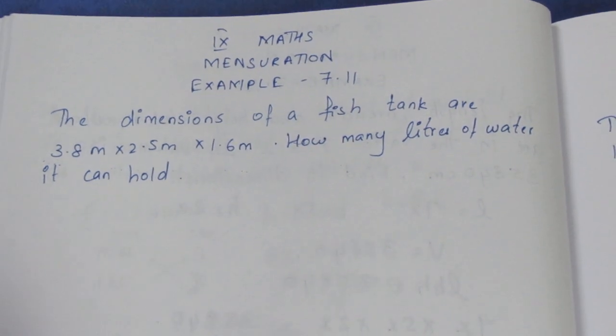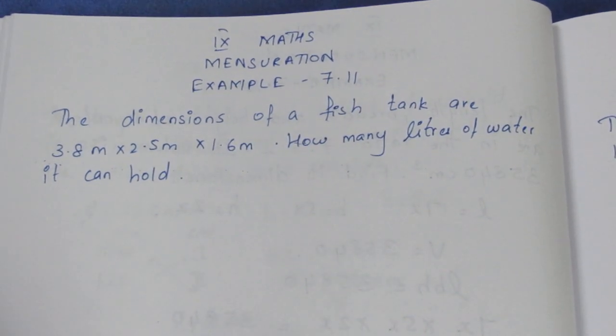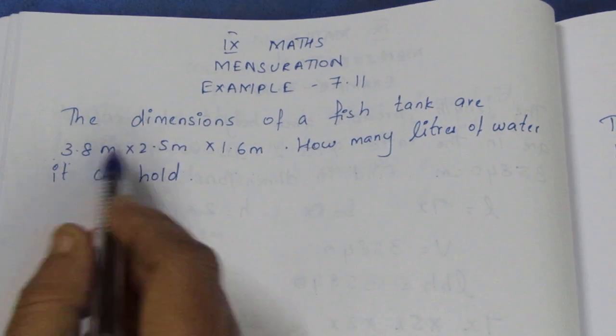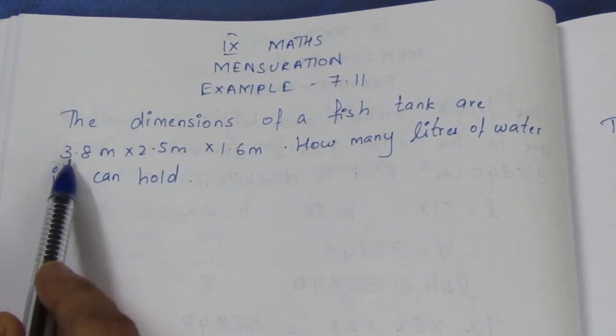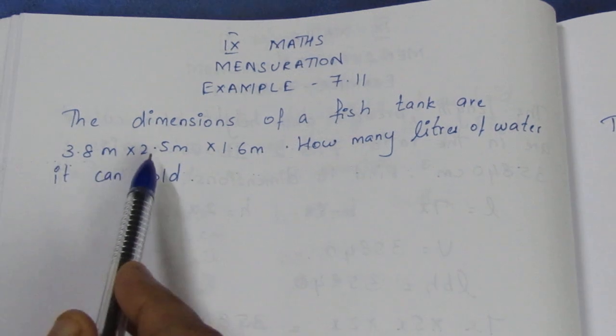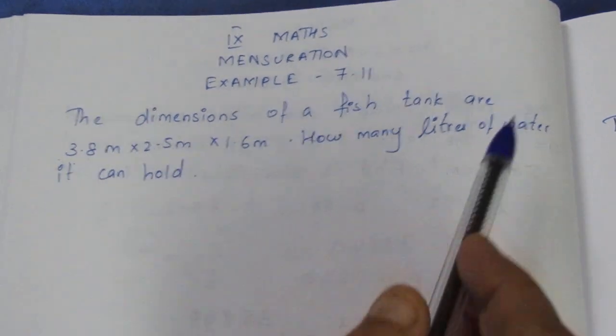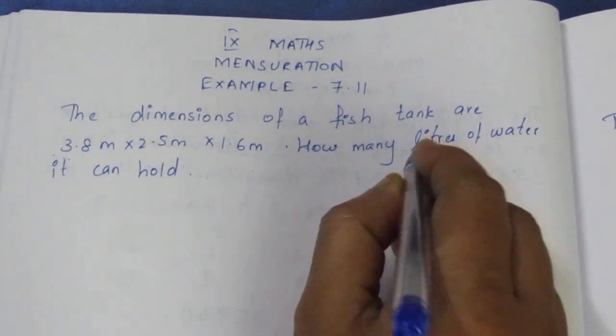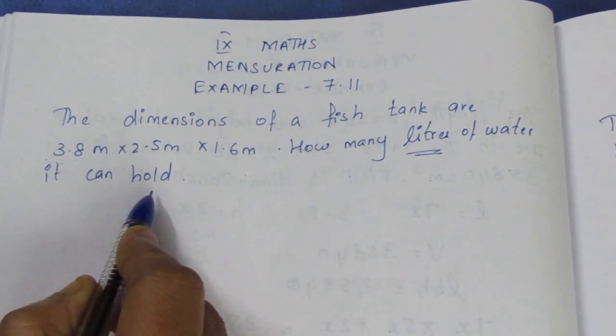Let's look at the dimensions of a fish tank. The dimensions of a fish tank are in cuboid shape. The length, breadth, height are 3.8m, 2.5m, 1.6m. How many liters of water can it hold?